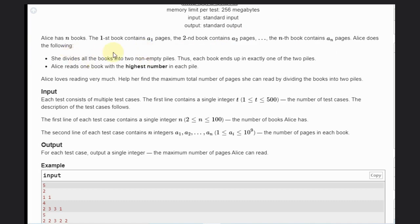She divides all the books into two non-empty piles. Thus, each book ends up in exactly one of the two piles. Alice reads one book with the highest number in each pile and Alice loves reading very much. Help her find the maximum total number of pages she can read by dividing the books into two piles.